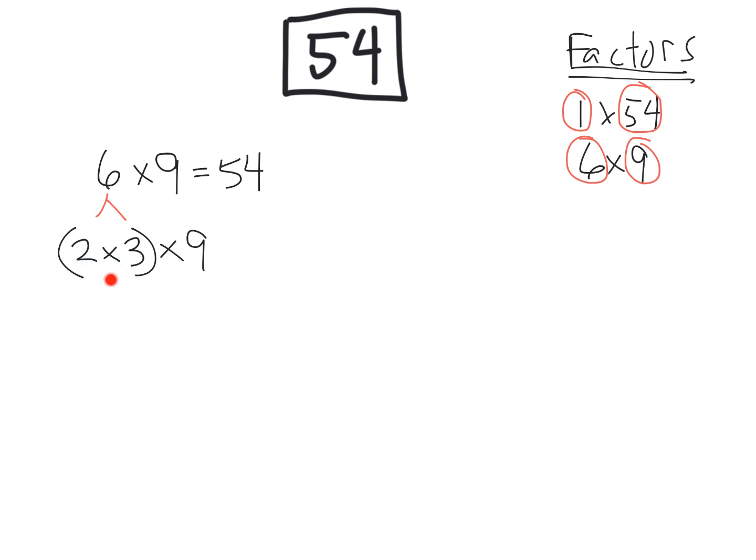So now 2 times 3 times 9 is equal to 54. All right? Now using the associative property, we can group the 3 and the 9 together, and we would get 2 times 3 times 9. And we know that's still 54.